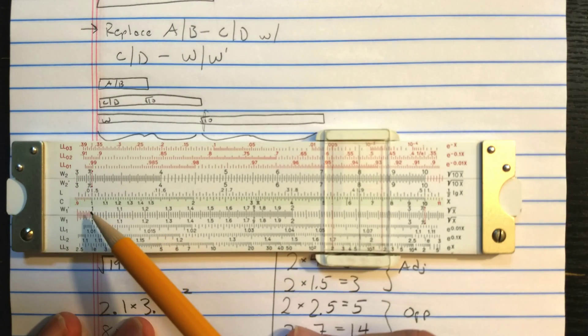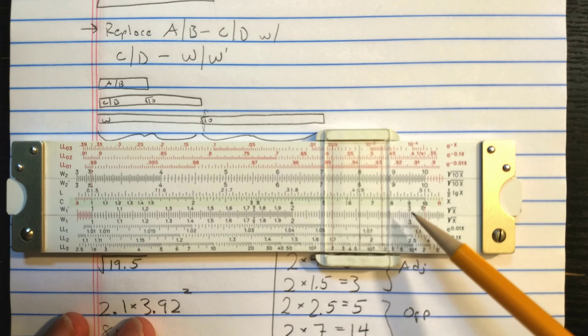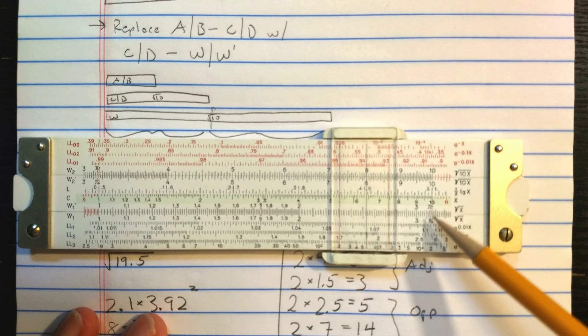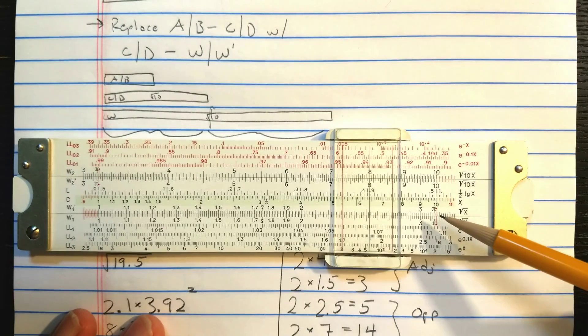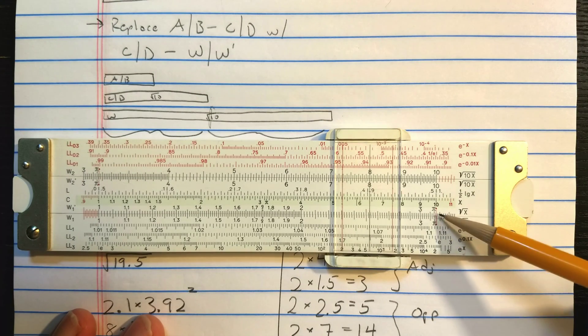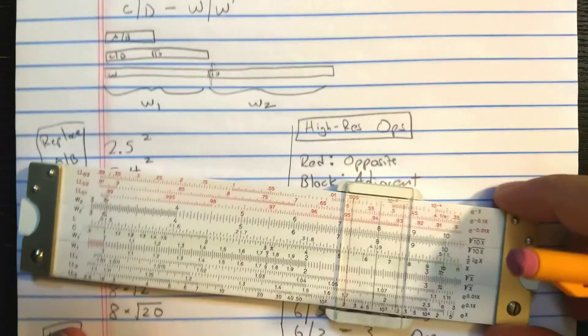So if you see here, you have the index 1. On the other end here, there is a red line, which is the right index of this W1 scale. That's at square root 10, which is right past pi. So let's see how to use these scales.